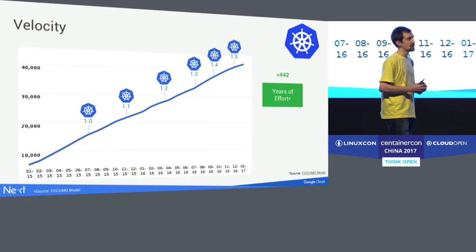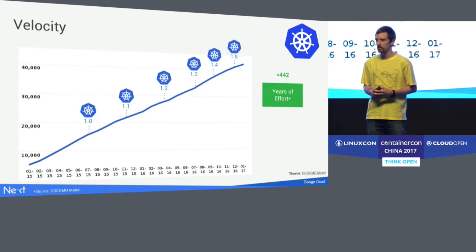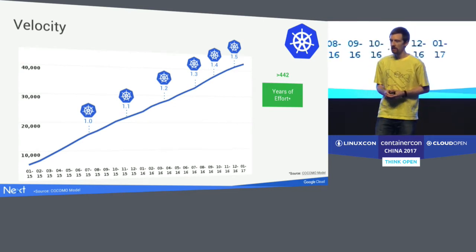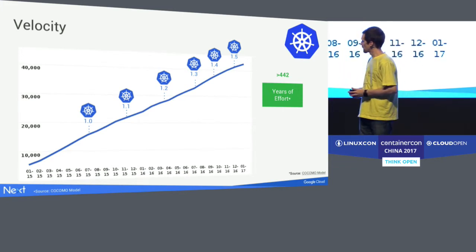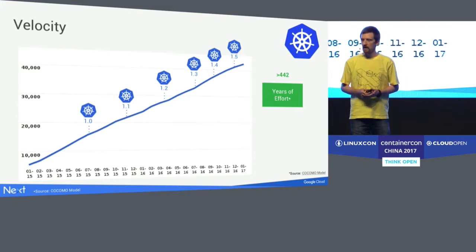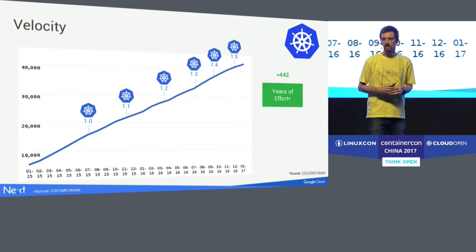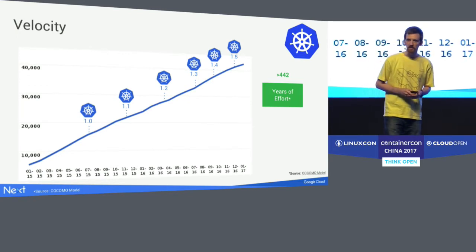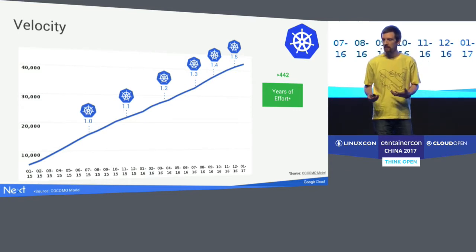The velocity of Kubernetes is pretty astounding. We have a graph showing the number of commits to the project and the releases. It's a somewhat dated graph, but we have huge velocity over the last three years. After we released 1.6, we're at well over 50,000 commits, and we're continuing to get more commits and contributors.